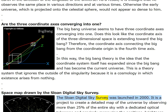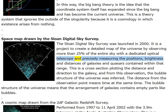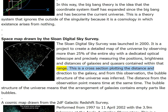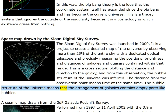The Sloan Digital Sky Survey was launched in 2000 as a project to create a detailed map of the universe by observing more than 25% of the entire sky with a dedicated optical telescope and precisely measuring the positions, brightness, and distances of galaxies and quasars. This is a cross-section plotting distance and direction to the galaxy, from which the bubble structure of the universe was inferred. The distance from the observation point means time; the bubble structure means the arrangement of galaxies contains empty parts like bubbles.